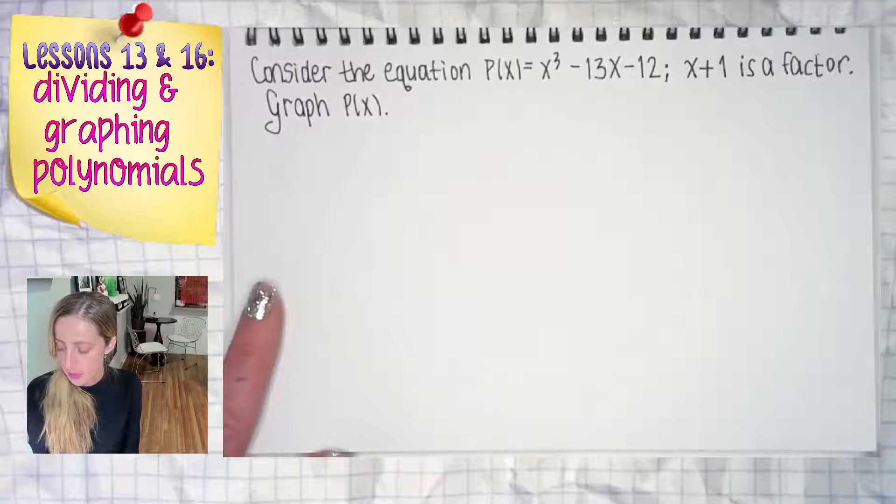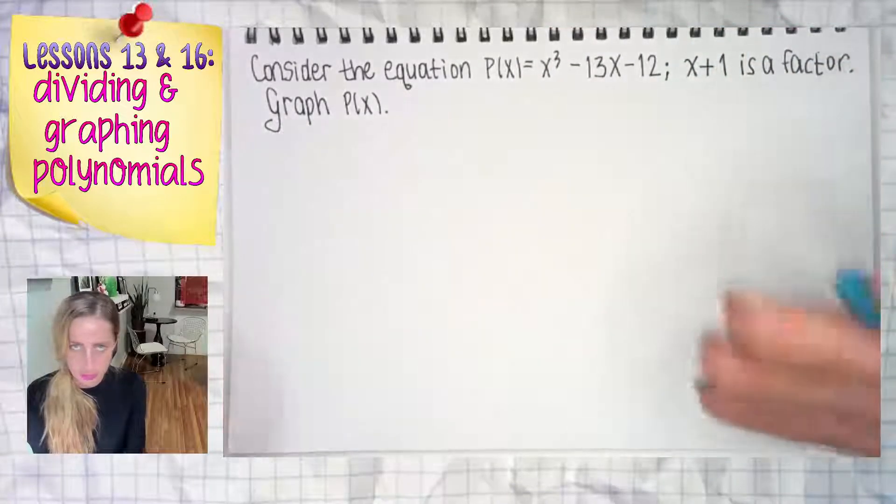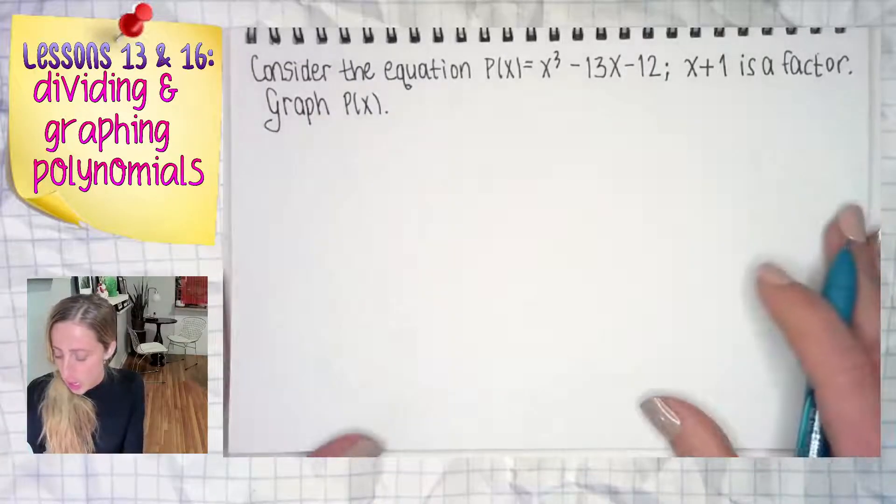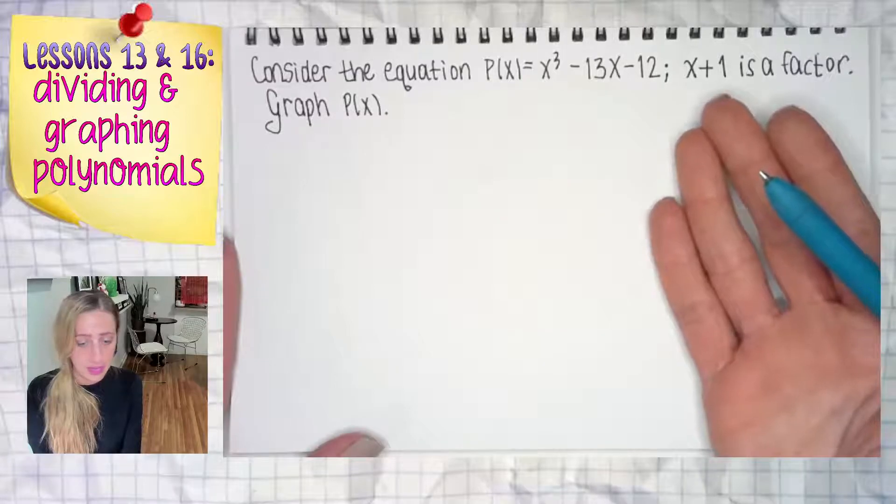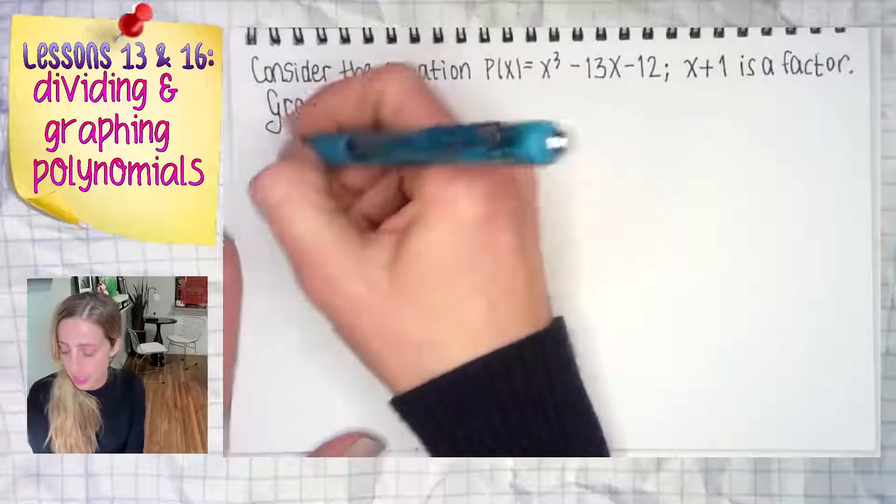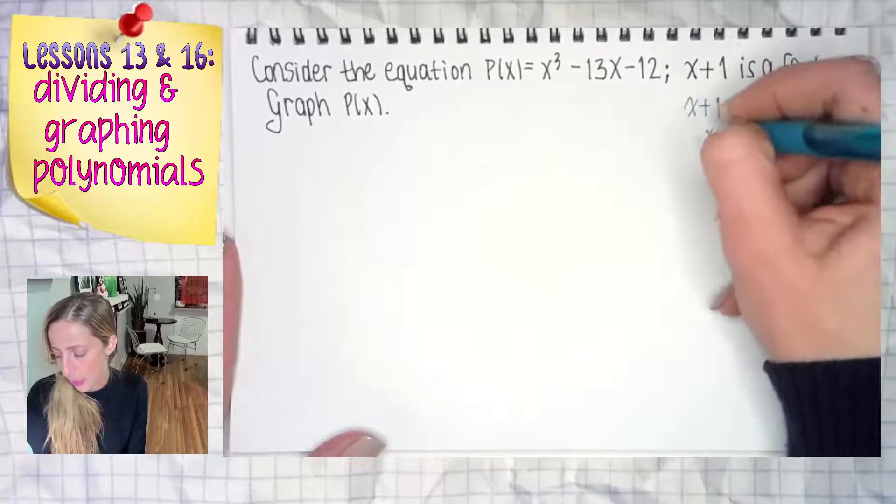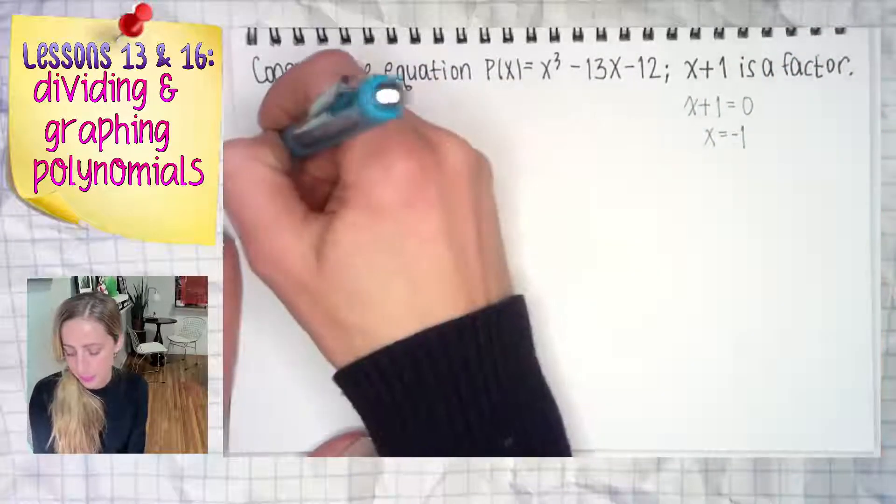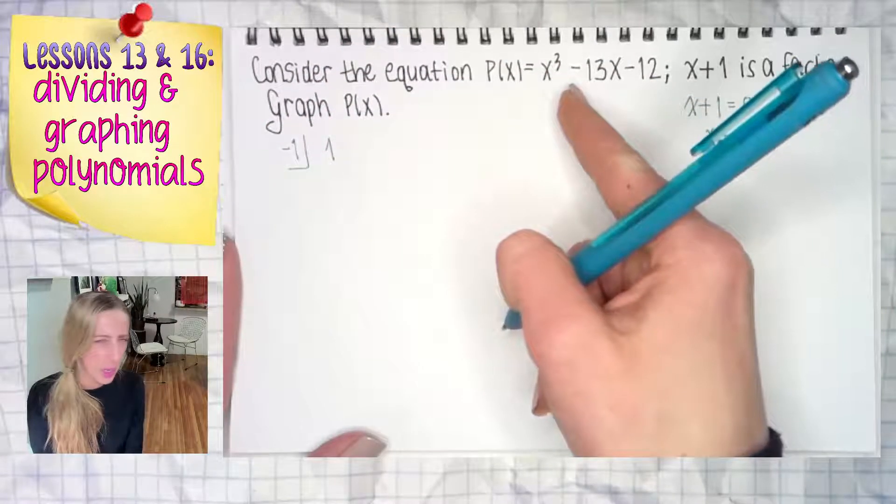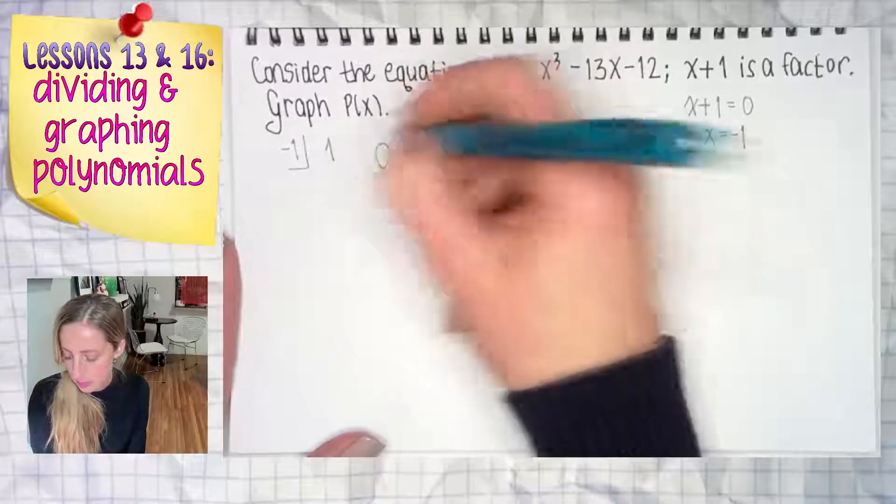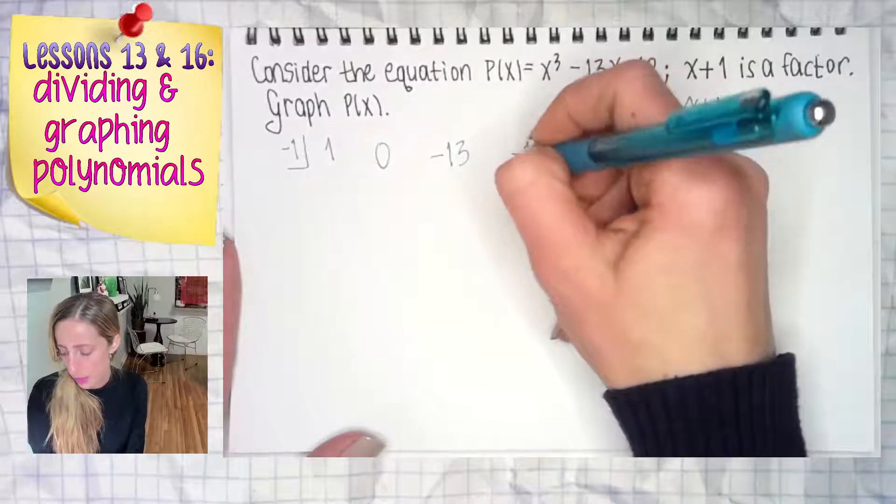Now since I'm dividing by x plus one to find my quotient the other factor or that could be factored further of course, I can use synthetic. I have a linear dividend with the leading coefficient of one. So we take that x plus one and we're going to set it equal to zero and we get x equals negative one. Negative one in the corner there.